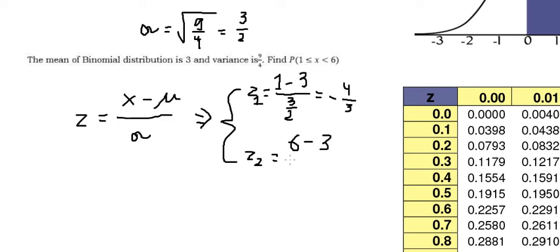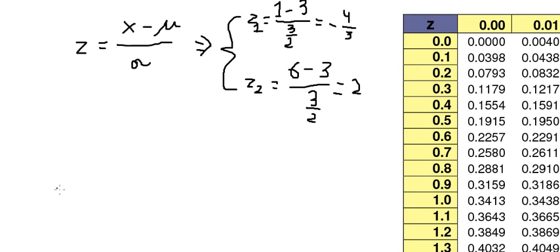We have Z number 2, that's about number 6 minus number 3 over 3 over 2. We calculate this one and we have about number 2. In this situation, they want to find probability from negative 4 over 3 to number 2.